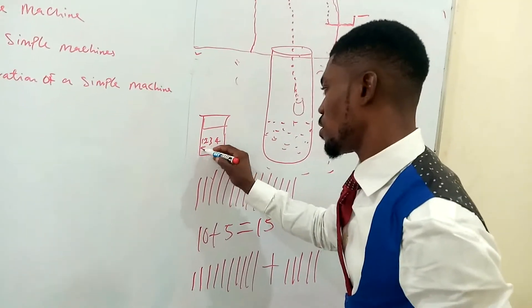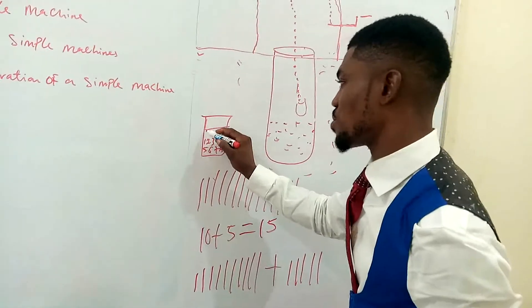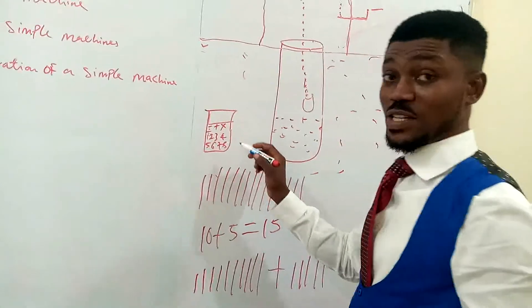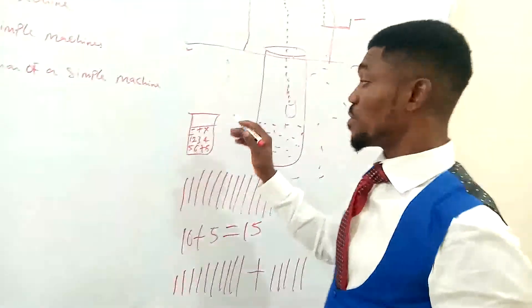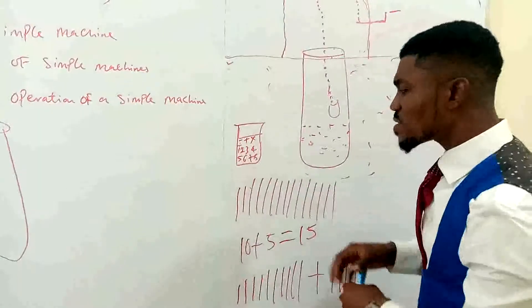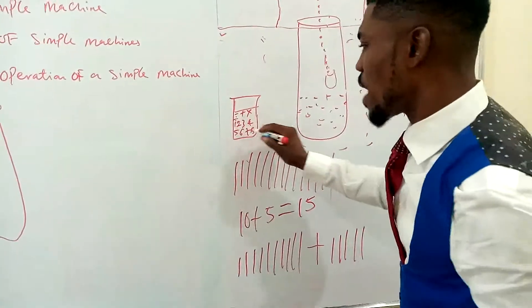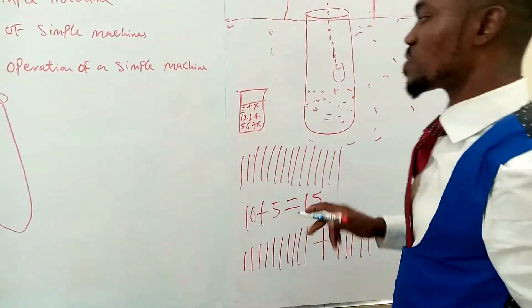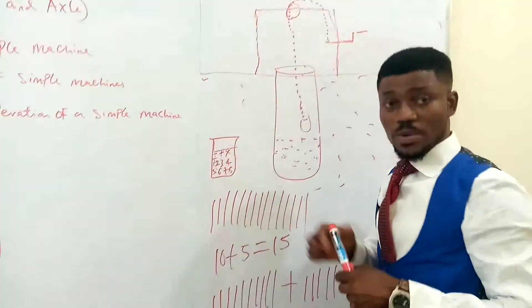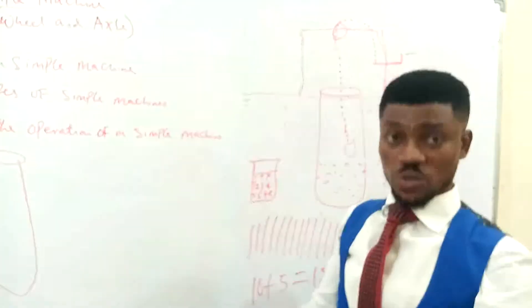You have subtraction, addition, multiplication, division, etc. This is how a calculator looks like, a typical calculator. So, if you are asked to multiply 10 by 5, what you need to do is just to press 1 and 0, 10, plus 5, equals, and you get your result. Now, this is how simple machines can be very useful to us.